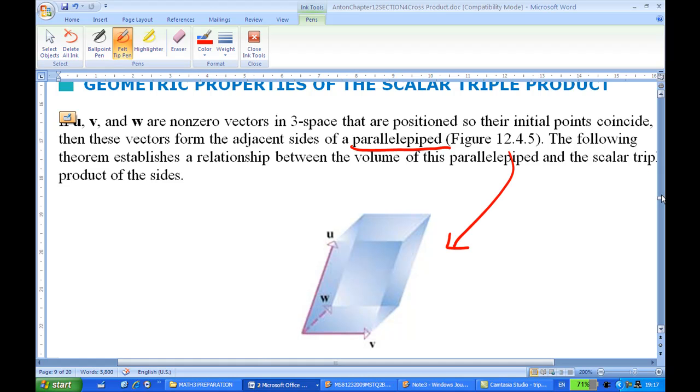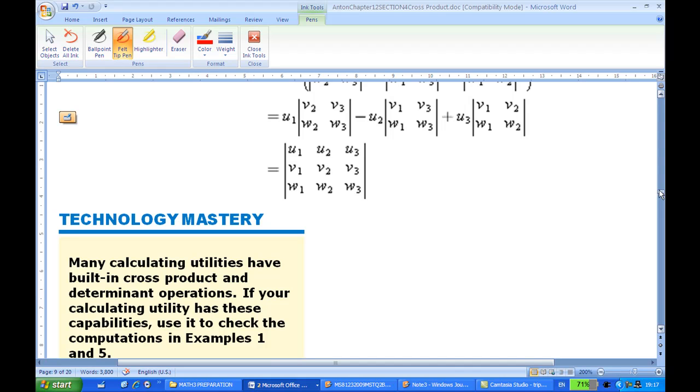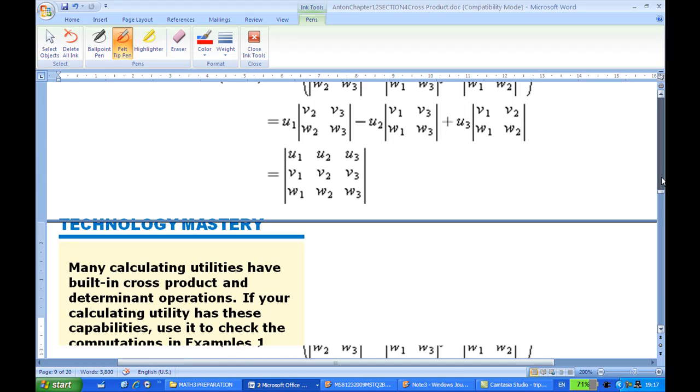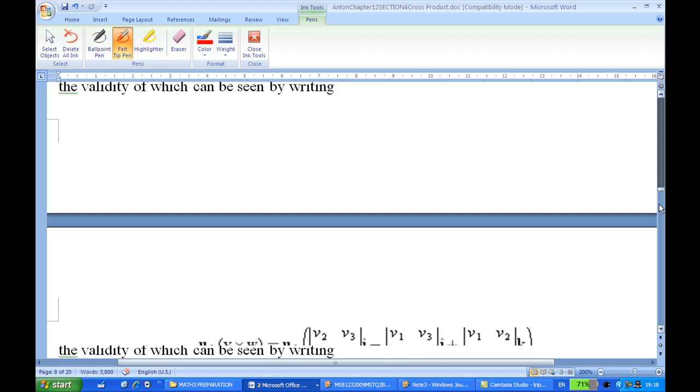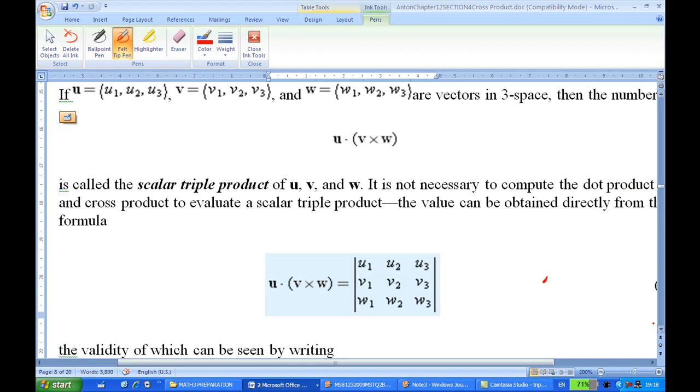And how do I find the volume of the parallelepiped? It says that in Howard Anton, to find the volume of the parallelepiped, one way to do is form the scalar triple product. Okay, u dot v cross w will give you the volume of the parallelepiped here. You may want to refer to Howard Anton.